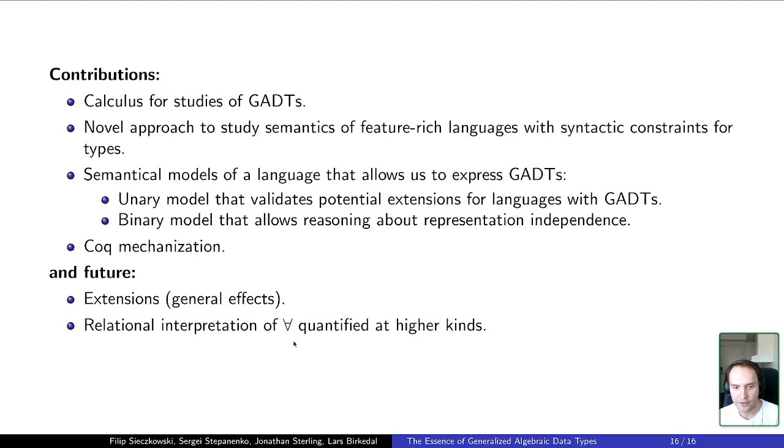And another future direction is to try to extend our relational approach to types quantified at higher kinds, because right now we extend our syntax of normal neutral forms only at the ground kind, so we cannot prove interesting binary properties if we have a program that quantifies over something of kind star to star, for example.